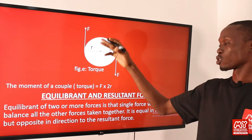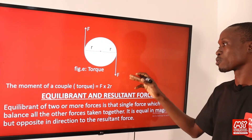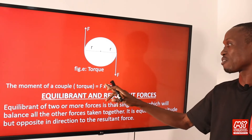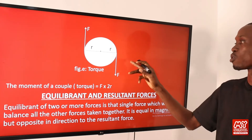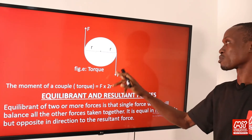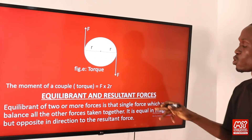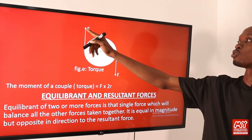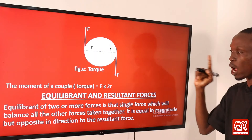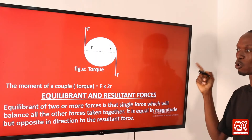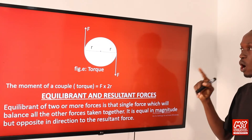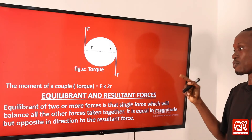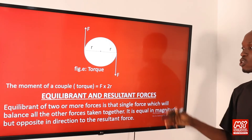This is a typical illustration of a couple. The moment of a couple, also known as torque, is equal to F times 2r, where 2r is the distance between the two forces. In calculations, you make use of one of the forces, because from the definition it is one force times the perpendicular distance. Let's now differentiate between equilibrate and resultant force.